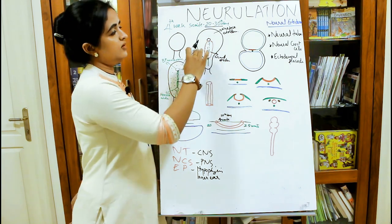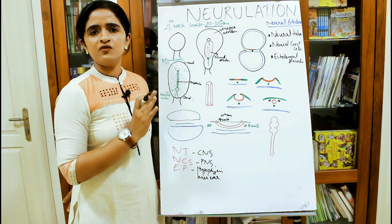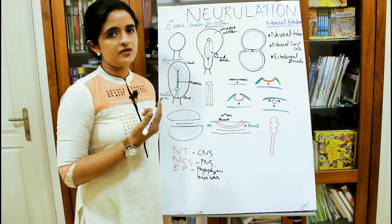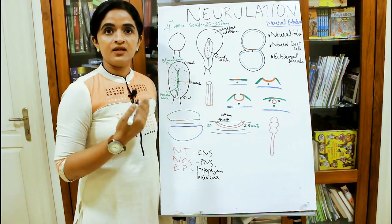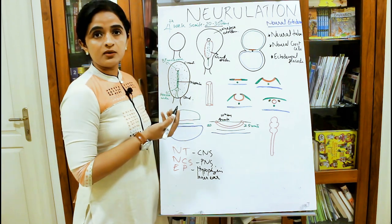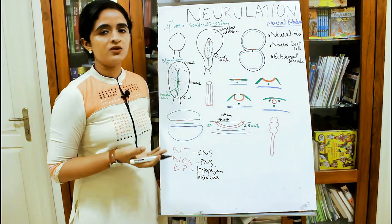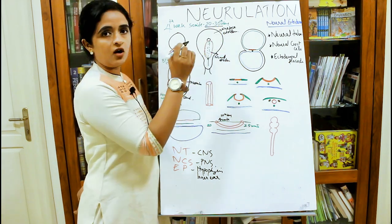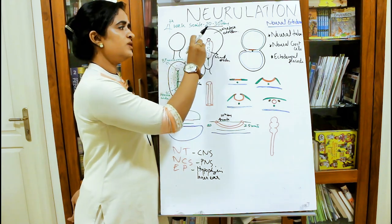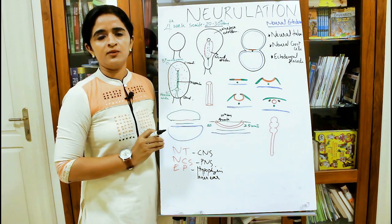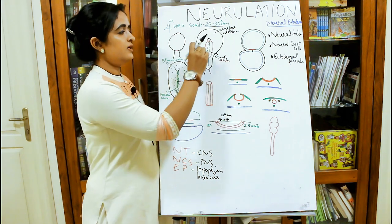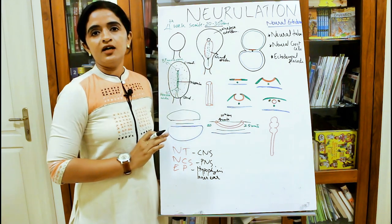The surface ectoderm gives rise to the epidermis, hair, nails, sebaceous glands, sweat glands, and also the stomodeum and proctodeum — the future mouth and anal cavity at the cranial and caudal ends. The neuroectoderm gives rise to the entire nervous system.